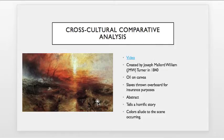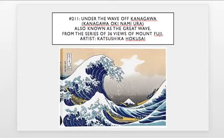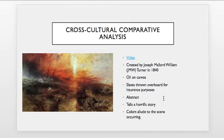Another artwork it can be compared with in a cross-cultural context would be the Slave Ship by Joseph Mallard William Turner, created in 1840 — a somewhat similar time period. This is an oil on canvas, so we get a difference in medium. They are both abstract: the Slave Ship could be considered more expressionist abstract, while The Great Wave is a more defined abstract because it's mixed with realism. They both tell a story and have a narrative behind them, which could be discussed as part of a comparative analysis.